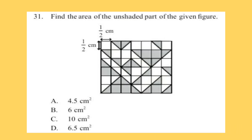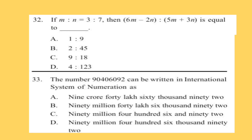Question 31: Find the area of the unshaded part of the given figure. Question 32: If m is to n is equal to 3 is to 7, then 6m minus 2n is to 5m plus 3n is equal to dash.